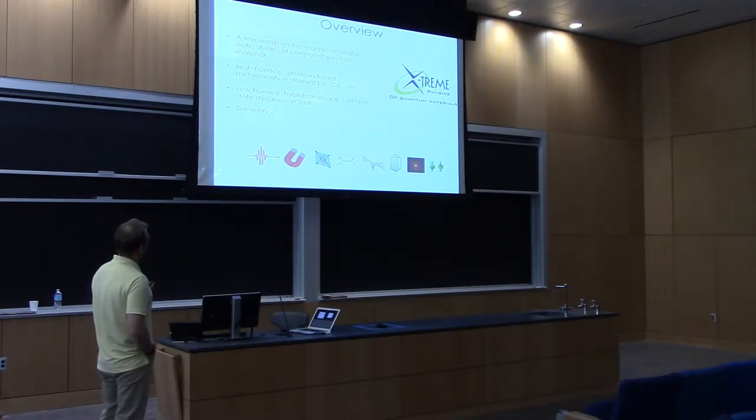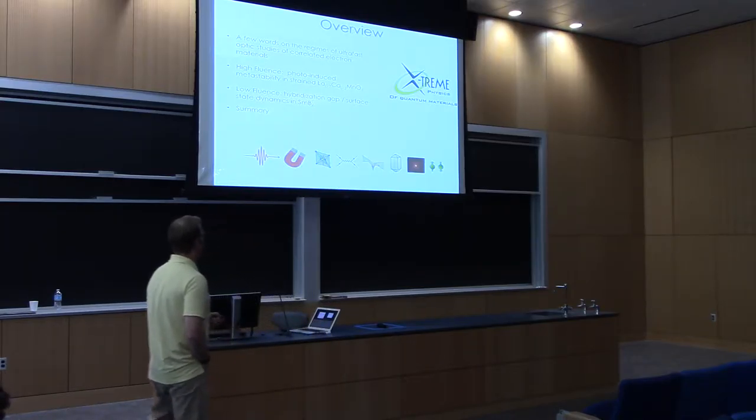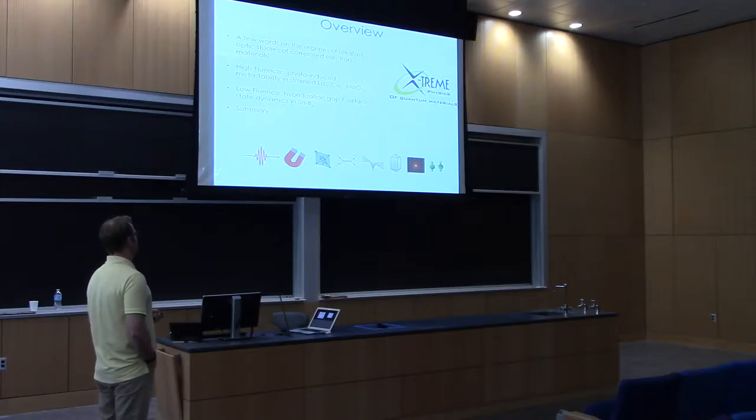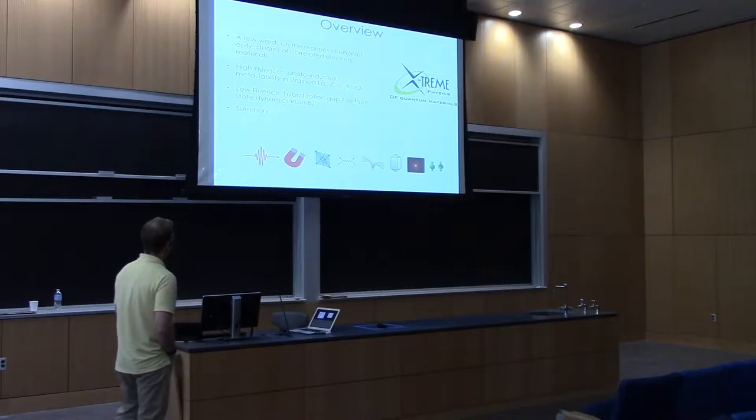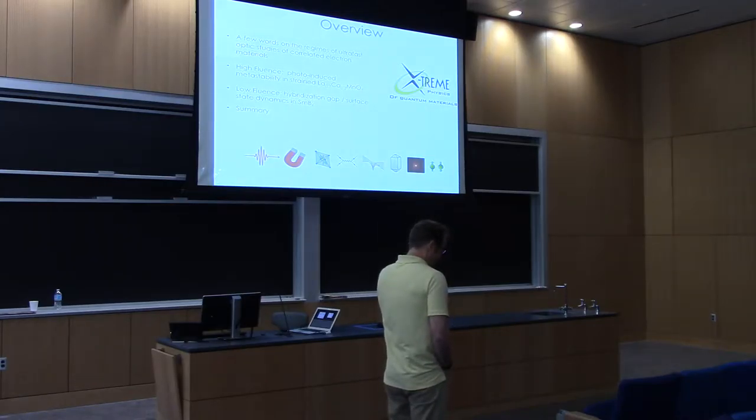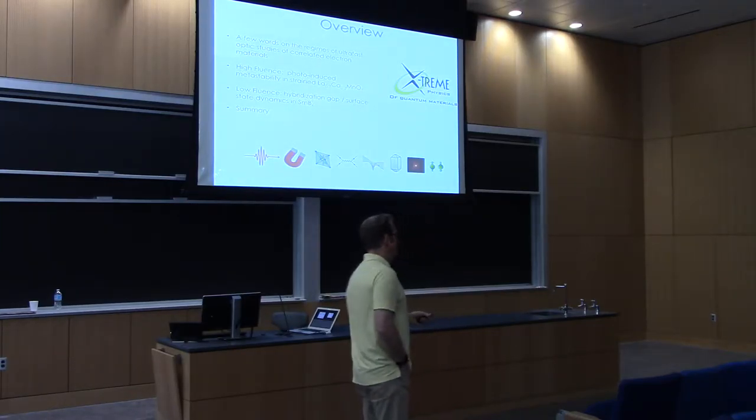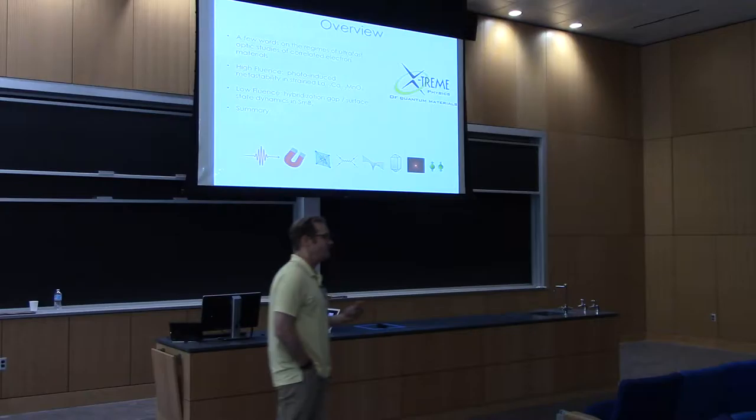I certainly appreciate the invitation to attend this workshop and enjoyed the talks today. We're working in different areas and I'll try to get that across in terms of doing things from low to high fluence. I'm going to first tell you a few words on these regimes of ultra-fast optics studies and correlated electron materials. When I say regimes I mean this low to high fluence. Then I'm going to give you a couple of examples from our work. Time permitting, I'll tell you about a high fluence study we recently did on strained calcium manganese oxide, an antiferromagnet. We saw a photo-induced antiferromagnetic insulator to ferromagnetic metal phase, that's a metastate. Then I'll tell you about some low-fluence work on Samarium hexaboride thin films.